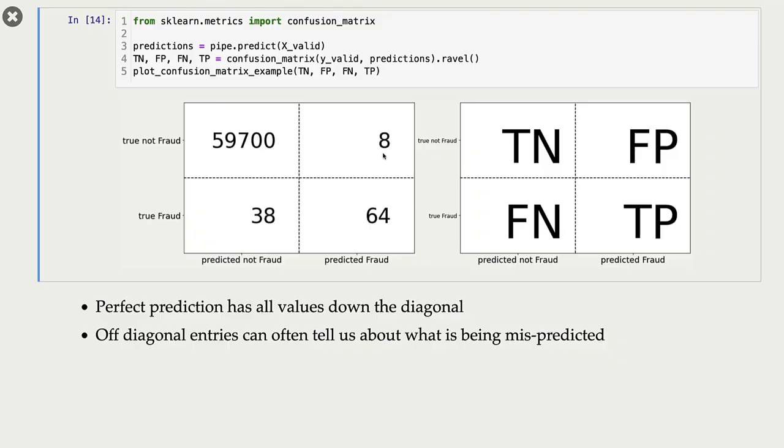And finally, this number 38 represents the number of examples which are actually fraud examples, but our logistic regression missed these examples. It classified them as non-fraud examples. Now, this seems like a problem, right? Our logistic regression classifier has missed about one-third of the fraud examples.